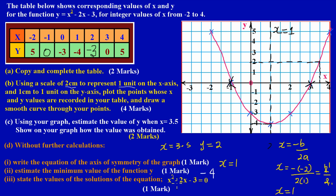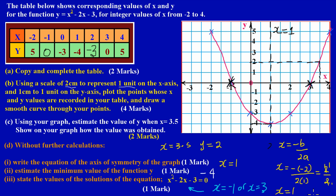For part three, find the solutions of the equation x squared minus 2x minus 3 equals zero. The solutions are simply where the graph cuts the x-axis. The graph cuts the x-axis at negative one and at positive three. So the solutions are x equals negative one or x equals positive three.